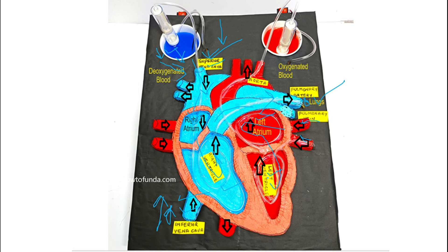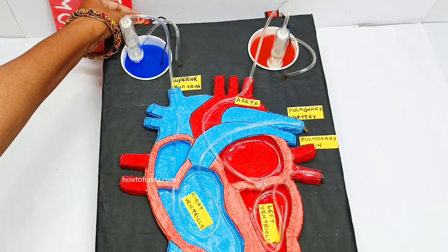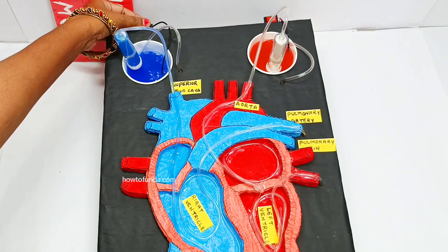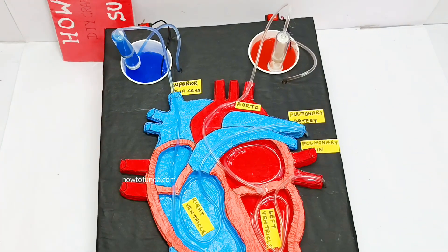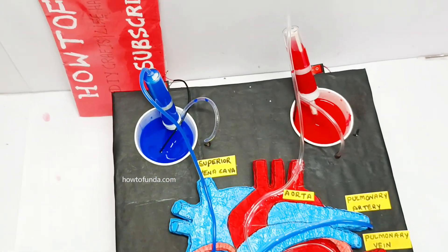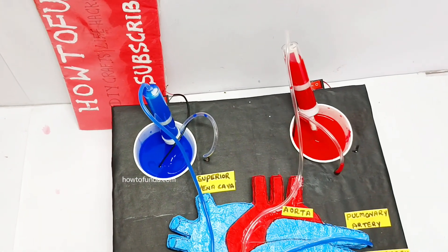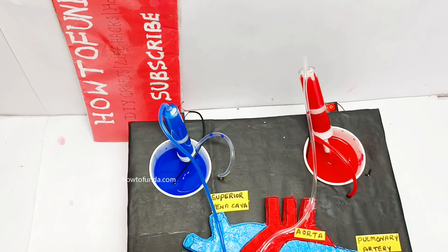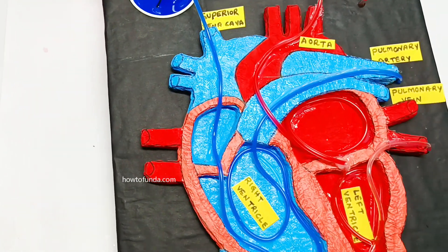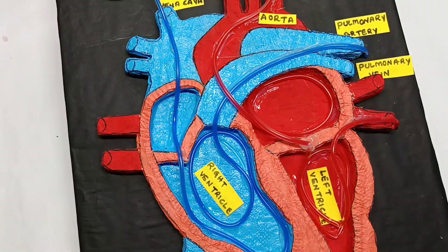the left ventricle is going to pump the oxygenated blood via aorta and it sends to the various parts of the human body. So you now get some idea? Thank you.